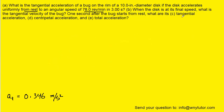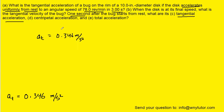Part C is a bit of a trick question, because it asks for the tangential acceleration one second after the bug starts from rest. We calculated the tangential acceleration three seconds after the bug started from rest, but the tangential acceleration is a constant value. The question notes that the disk is accelerating uniformly — meaning constantly — so the tangential acceleration from Part A is the same for Part C: 0.346 meters per second squared.